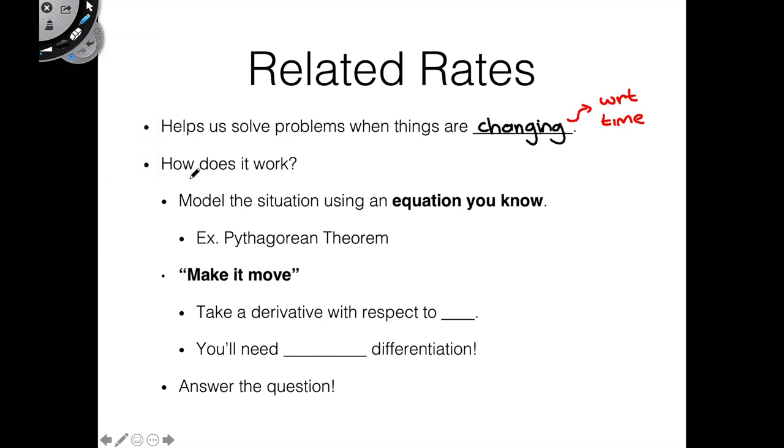So how does related rates really work? First, we model our situation using an equation we know, for example we have the Pythagorean theorem there. So we were able to do this because we had one thing moving that way, another thing moving this way, and so we were able to use that relationship to our advantage. The next thing we do is we make it move. So we set up this static equation and then we make it move. And to do this, we take a derivative with respect to t, because that's now going to tell us how all the quantities in that equation are changing with respect to time. But to do this, don't forget, we will need implicit differentiation.